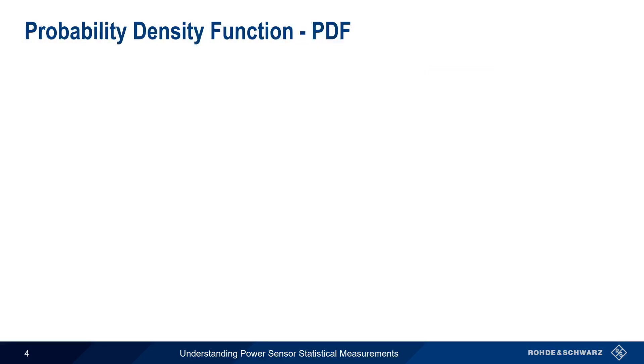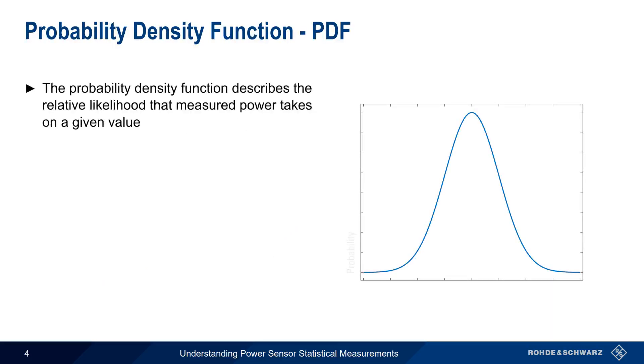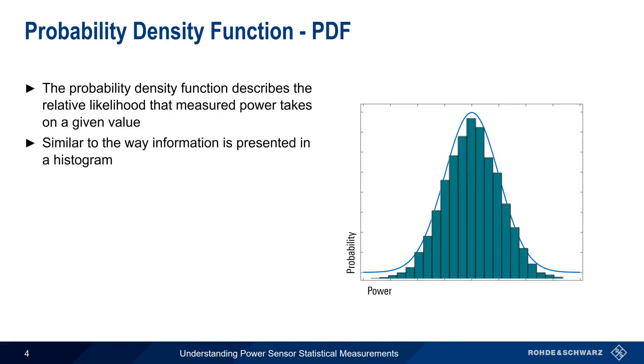Let's start with the Probability Density Function, or PDF. The Probability Density Function describes the relative probability that measured power takes on a given value. The information contained in a PDF is similar to the information contained in a histogram, but shows continuous rather than discrete values.